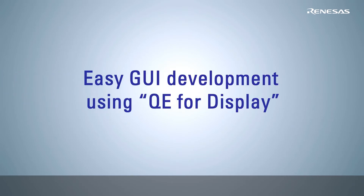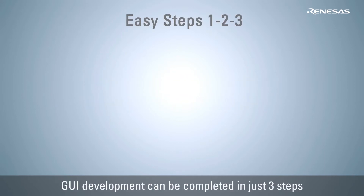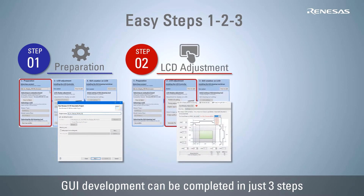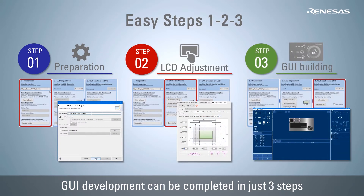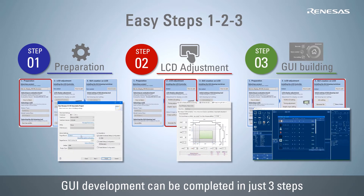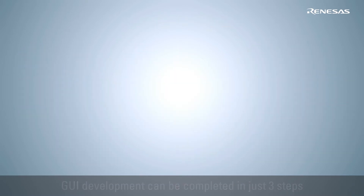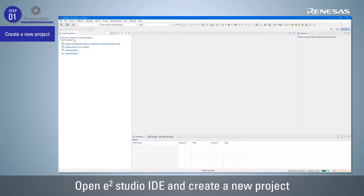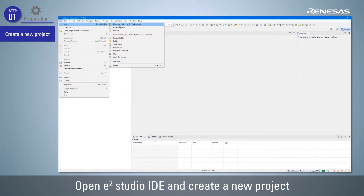Now let me introduce the actual GUI development procedure by using QE for Display. The workflow consists of three steps: project setting, LCD adjustment, and drawing graphics. By following the workflow guide using just these three steps, it is possible to develop a GUI which suits various needs. First, open e² Studio IDE and create a new project.